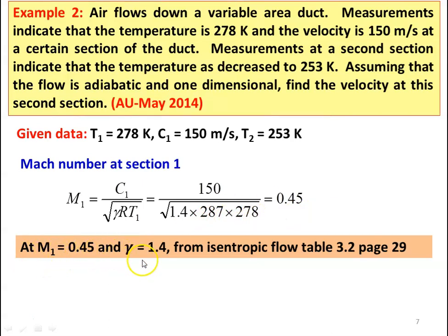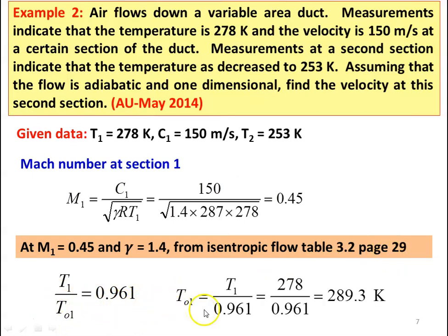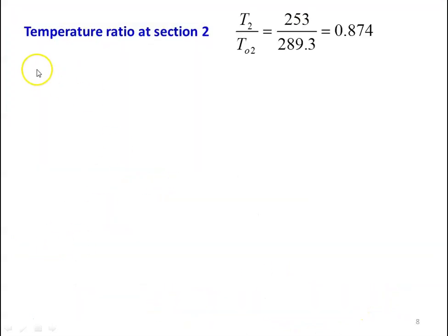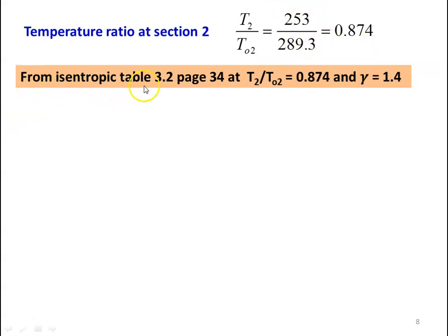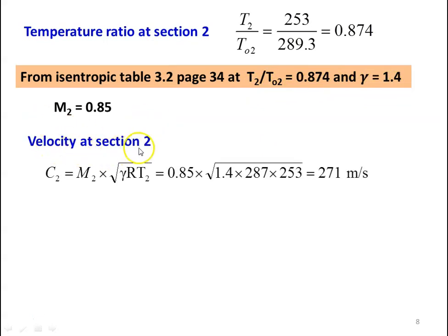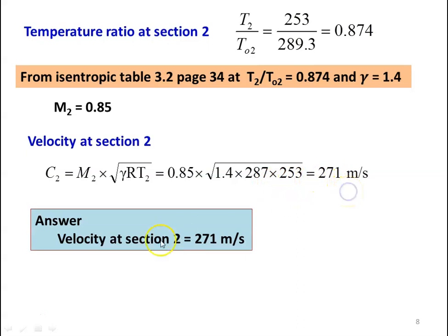At M1 equal to 0.45 and gamma equal to 1.4, from isentropic table 3.2, page number 34, we find T01 equal to 289.3 Kelvin. Then T2 by T02 equal to 253 divided by 289.3, which is 0.874. Using the isentropic table at T2 by T02 equal to 0.874 and gamma equal to 1.4, M2 equal to 0.85. So the velocity at section 2: C2 equal to M2 into square root of gamma R T2, which is 0.85 into square root of 1.4 into 287 into 253, equal to 271 meters per second. Answer: velocity at section 2 equal to 271 meters per second.